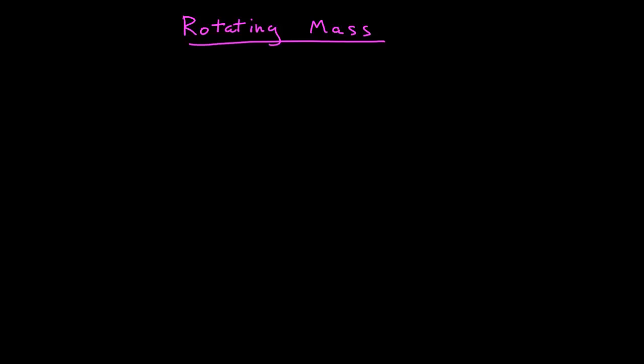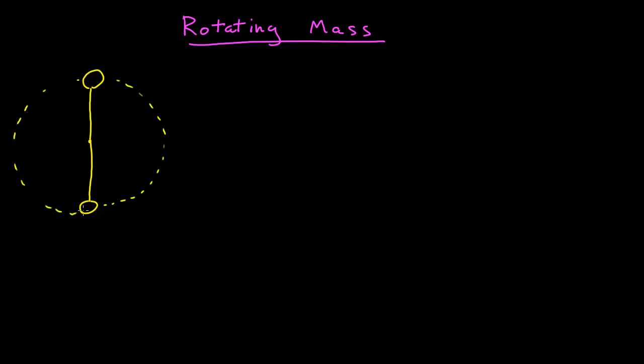Here I want to do the example of rotating mass. What I mean is I have a mass on a string that I'm rotating in a vertical circle, and I want to ask the question: what is the difference in tension between the mass at its lowest point of rotation and the highest? I really like this problem because it uses so much of what we've done so far in the course, and if you can really understand how to solve this problem, you've learned a lot.